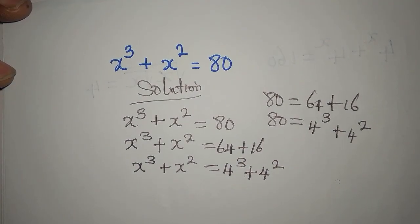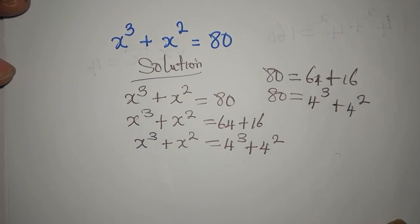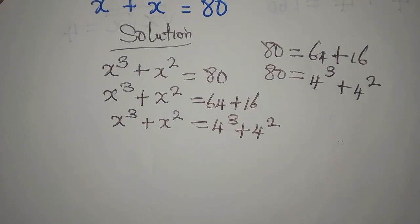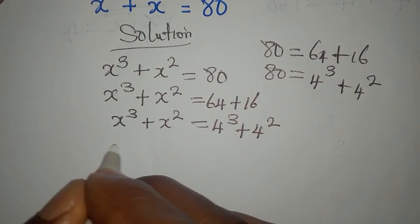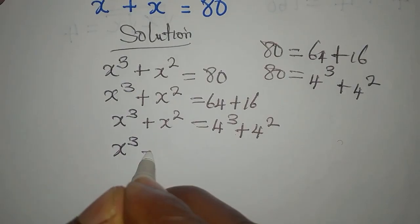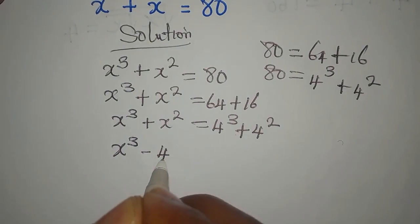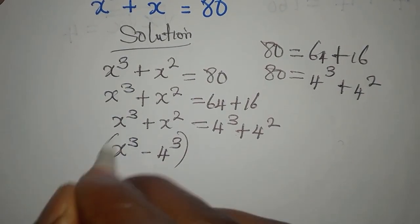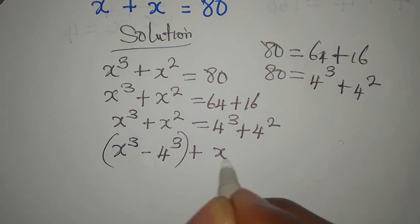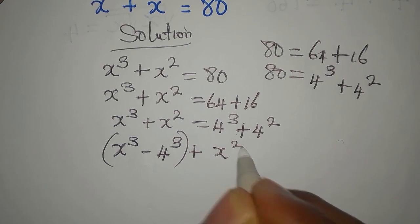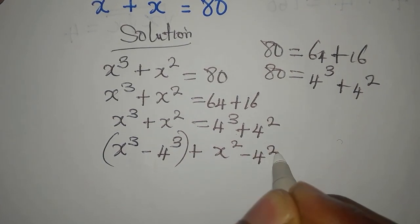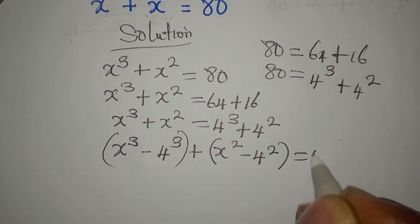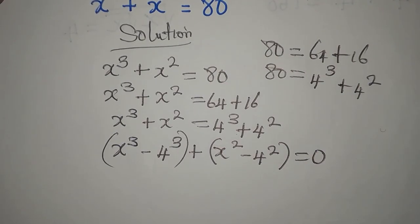So we reposition them: x³ minus 4³ will come together, then we have plus x² minus 4² together, so that everything is equal to zero.